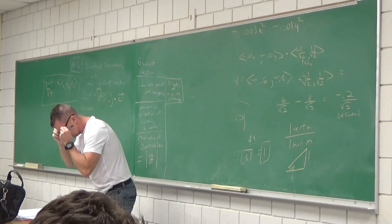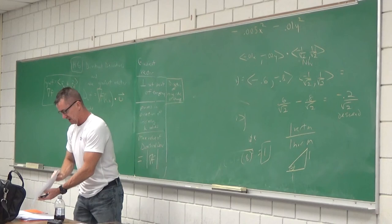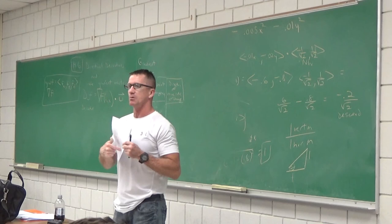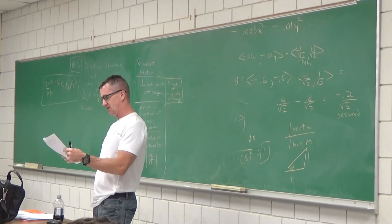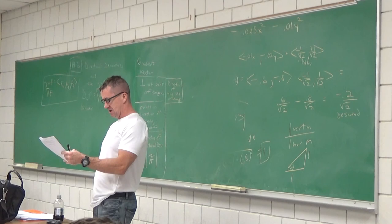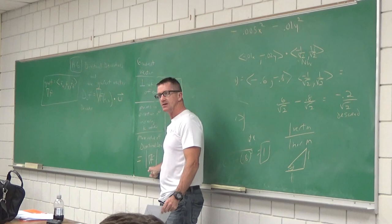Looking at your practice set — number 17 is like the problem we just did. Number 18 has vectors and you need to figure out which one is the gradient vector — it points in the direction of increasing k values. Number 19: if the gradient of f is given, the fastest rate of change at the origin is just the magnitude of that gradient. Number 20 asks for the maximum directional derivative — again, just the magnitude of the gradient vector.